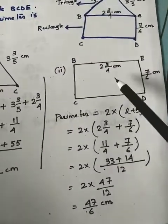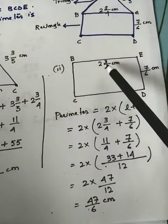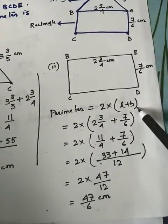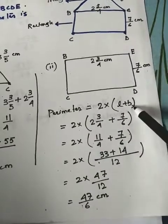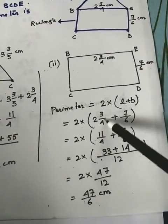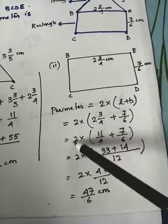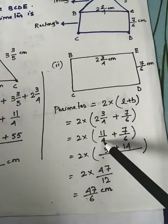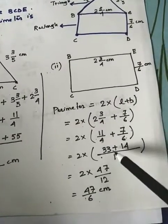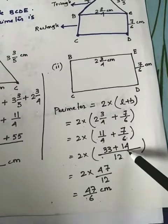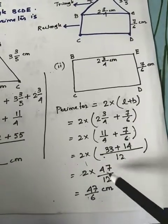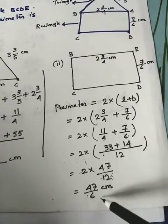Now for the perimeter of the rectangle: length BE = 2 and 3/4 cm, and ED = 7/6 cm. Using the formula perimeter = 2 × (length + breadth): convert 2 and 3/4 to 11/4 and keep 7/6. LCM of 4 and 6 is 12. So 2 × (3×11 + 2×7)/12 = 2 × (33+14)/12 = 2 × 47/12 = 47/6 centimeters.